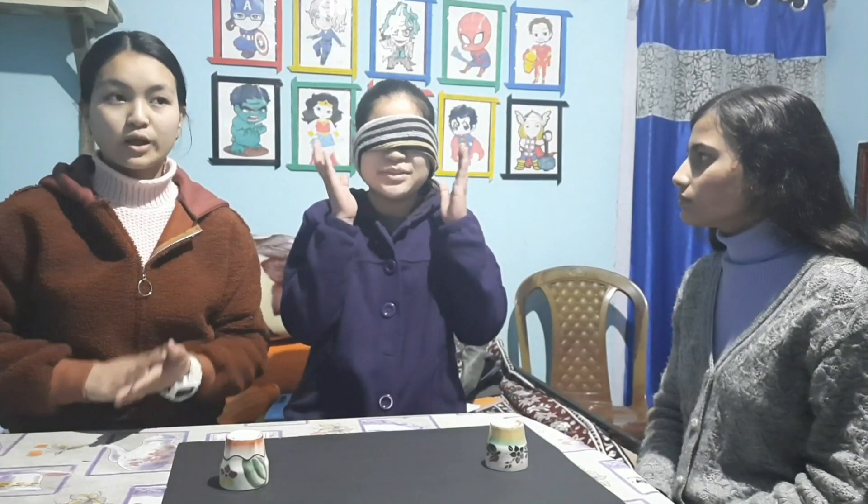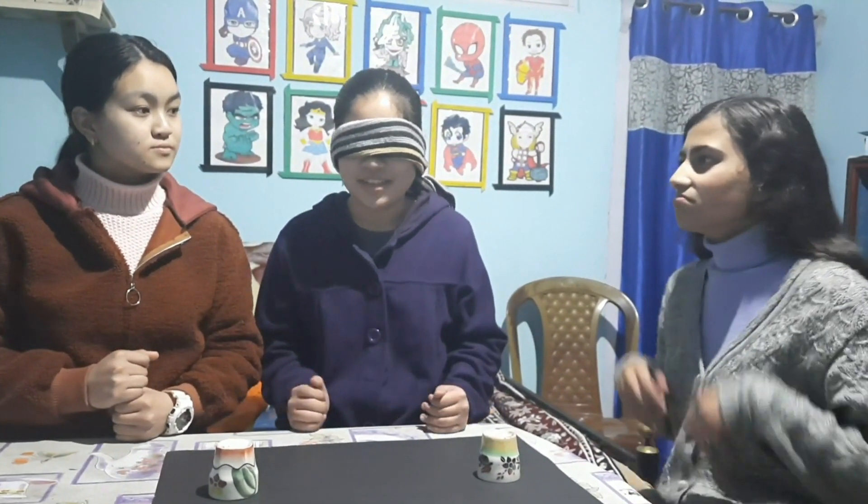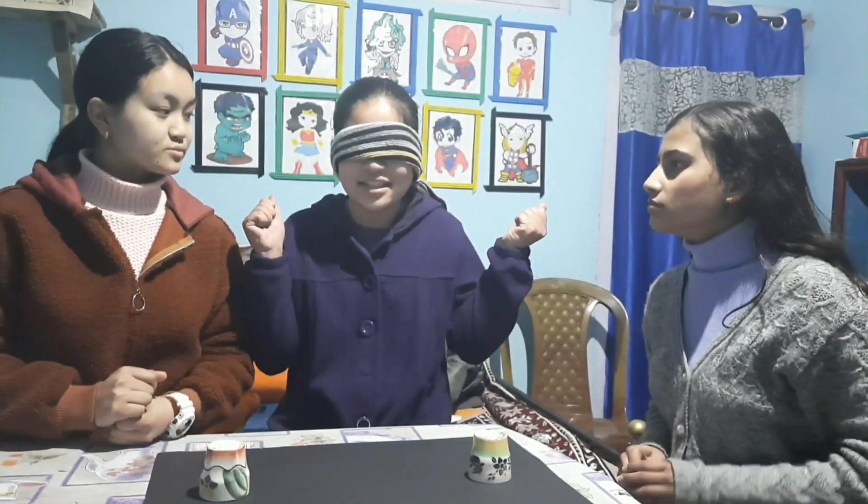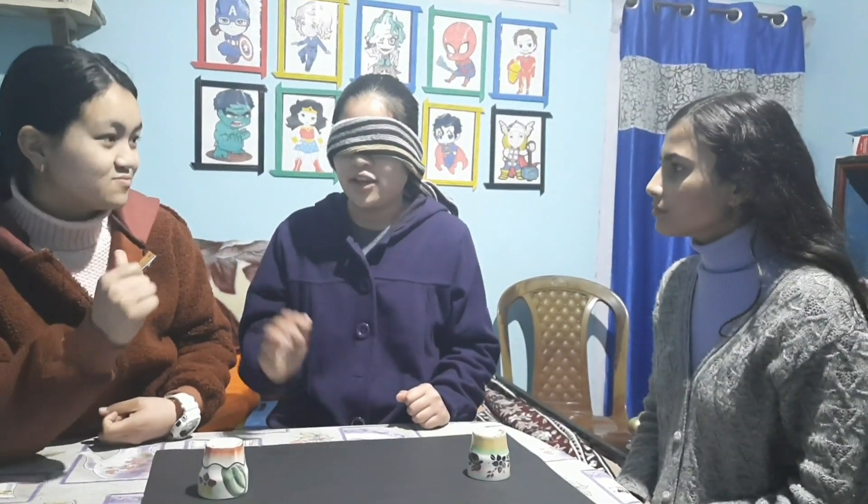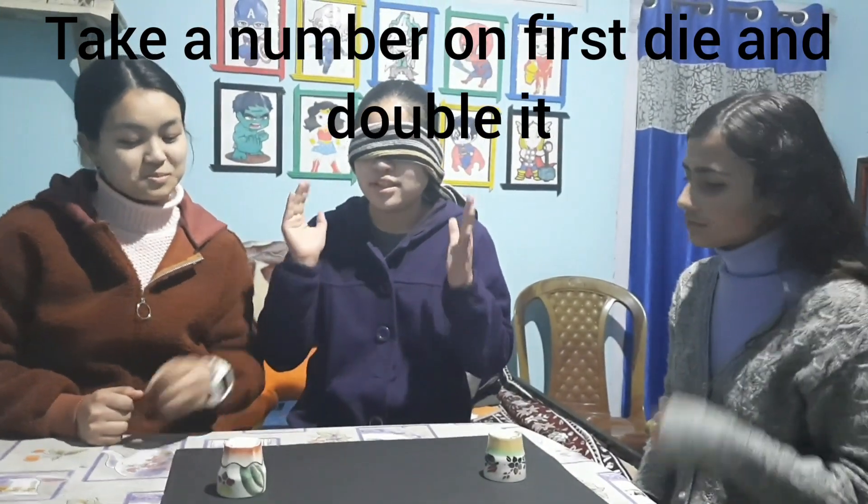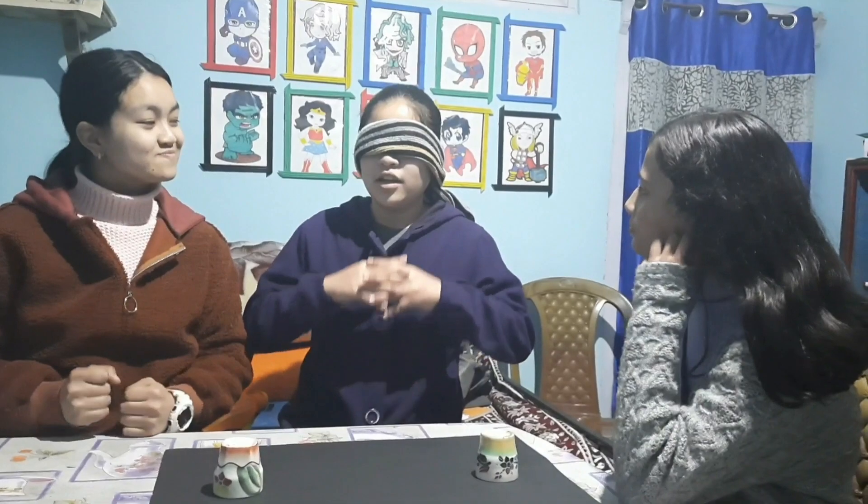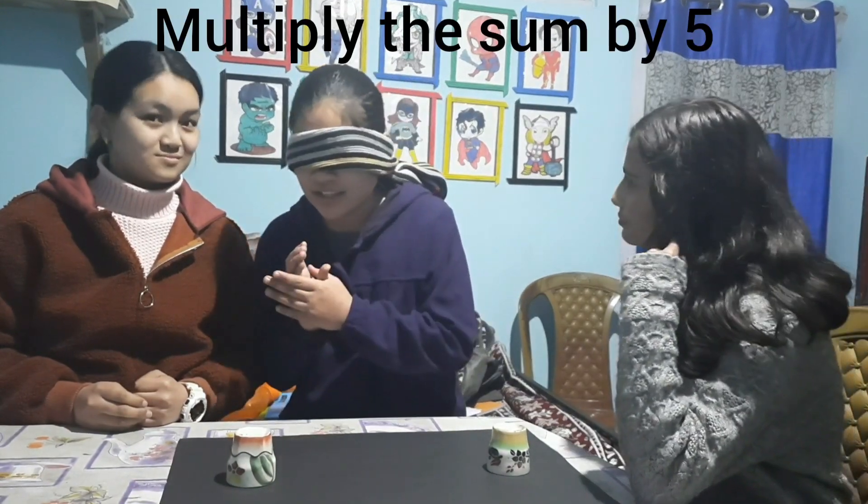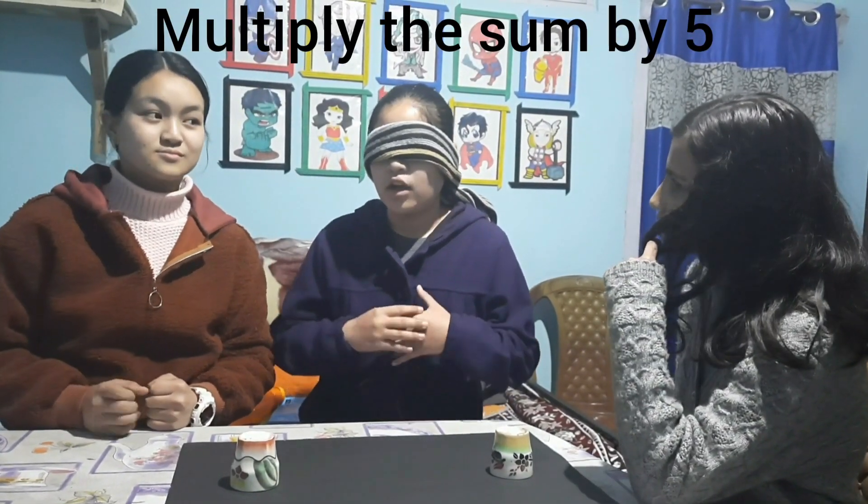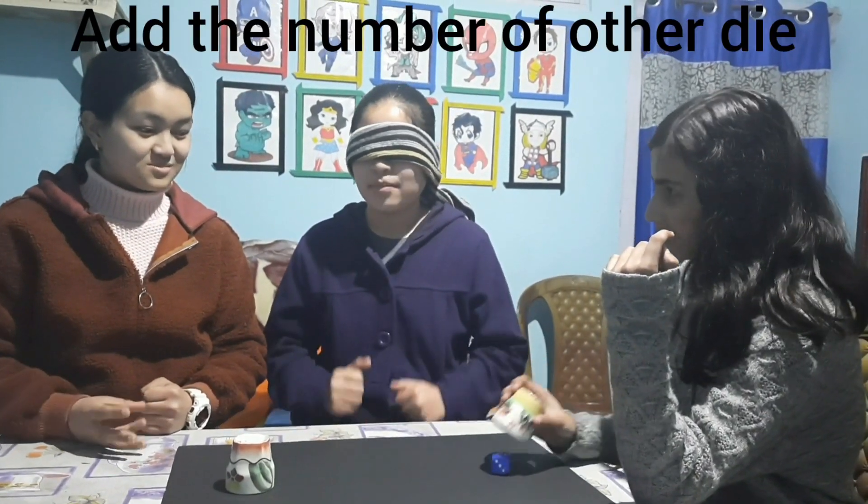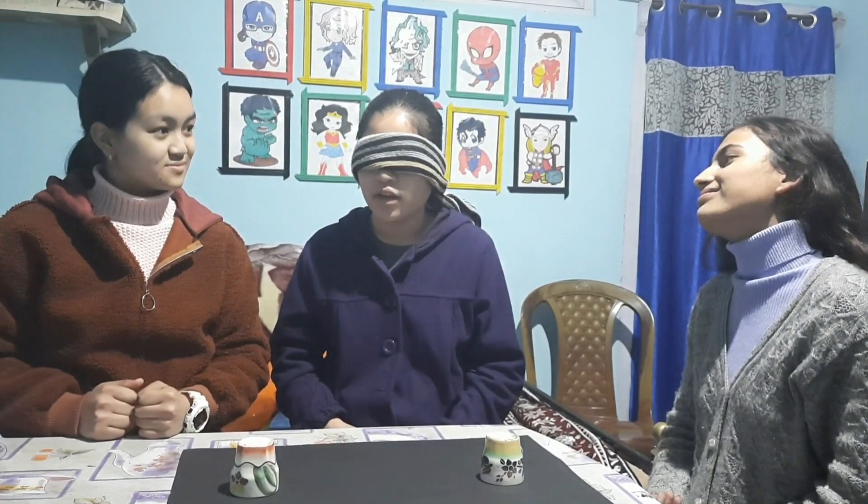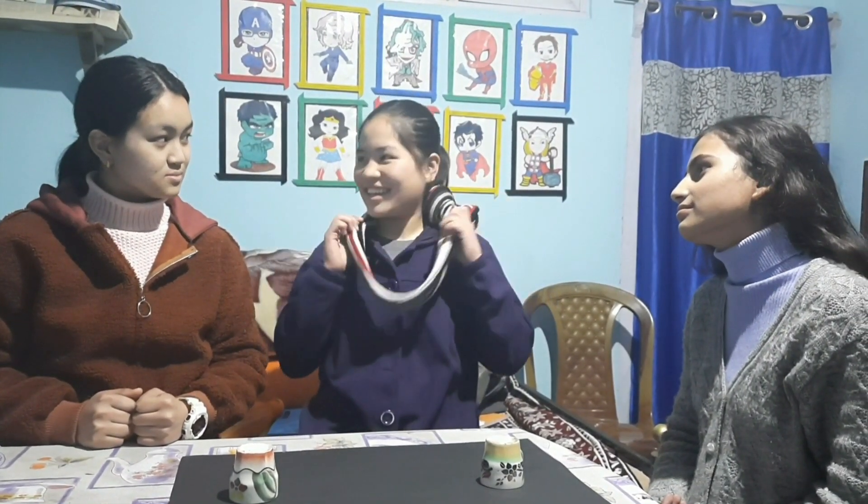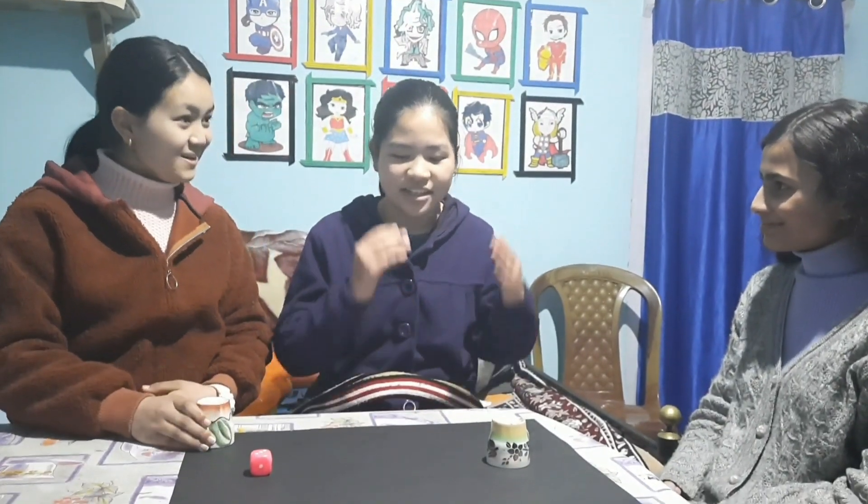So guys, because this is a math magic, you have to calculate some calculations. So first we start with a dice. You can double the dice, then add five to it. And then you can add the other dice to the total. So this dice is three and this dice is five.